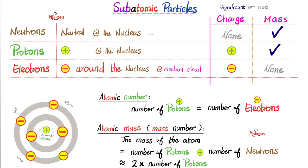The subatomic particles: neutrons are neutral and they are located in the nucleus. They do not carry a charge, yet their mass is significant. How about protons? Positively charged. Where do I find them? In the nucleus. Do they carry a charge? Yes, it is positive. Is their mass significant? Yes it is.